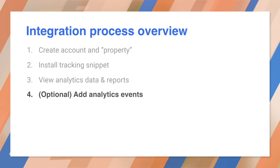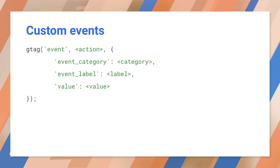The answer is to create your own custom analytics events corresponding to actions in the app. Google Analytics supports custom events that allow fine-grained analysis of user behavior. This code uses the gtag command, which is defined in the tracking snippet.